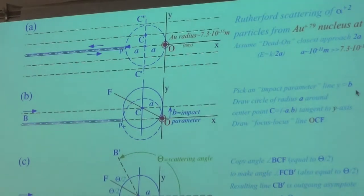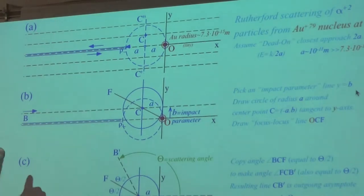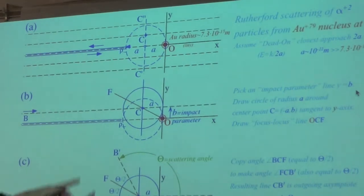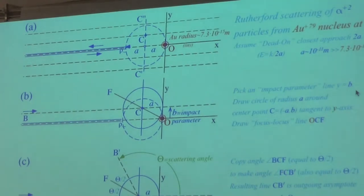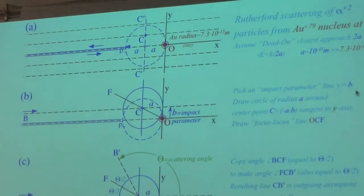If you want to calculate how far from the gold nucleus the alpha particle stops, you equate the electrostatic potential energy to the kinetic energy of the incoming alpha particle. Far away, there's all kinetic energy and no potential because the Coulomb interaction is zero at large distance. At the stopping point, all the energy is potential: Coulomb constant K over radius, which equals K over 2a.